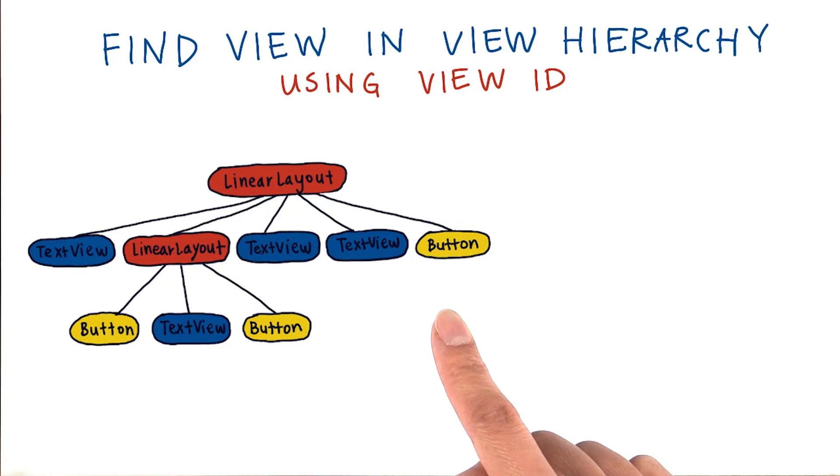Once we find them, we can store them as variables in the main activity. Remember, we're not creating new text views from scratch. We're just finding the existing ones in this view hierarchy.